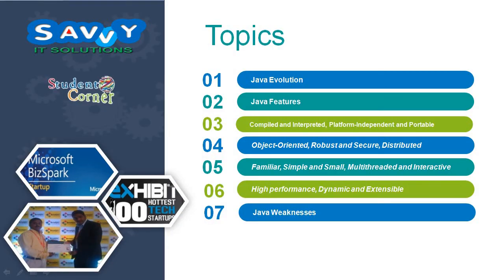The topics we need to cover are: first, Java evolution; next, Java features — compiled and interpreted, platform independent and portable, object-oriented, robust and secure, distributed, familiar, simple and small, multi-threaded and interactive, high performance, and dynamic and extensible. We will also mention one of Java's weaknesses.